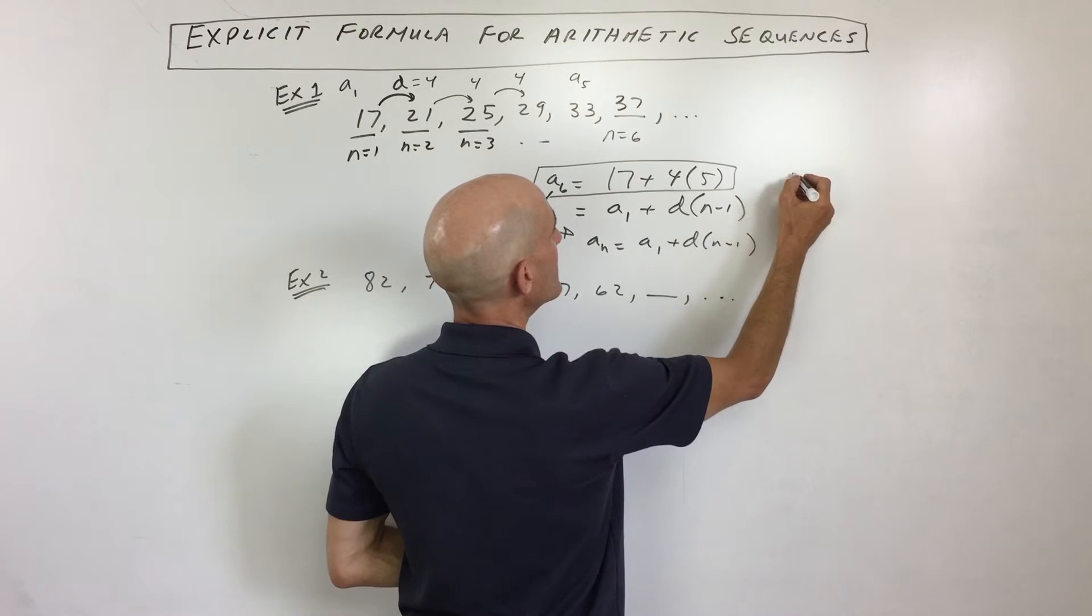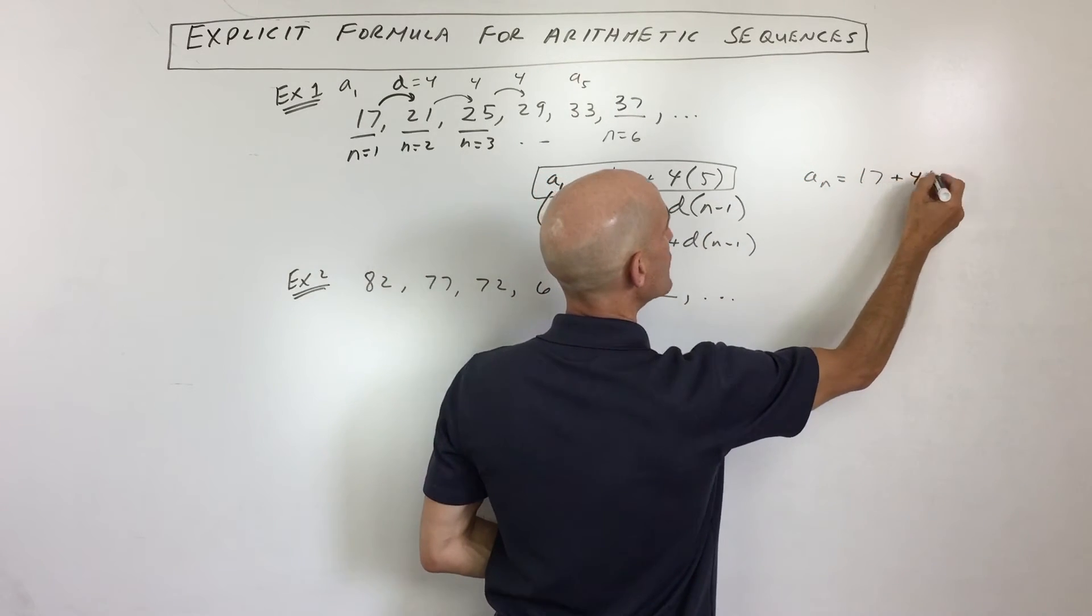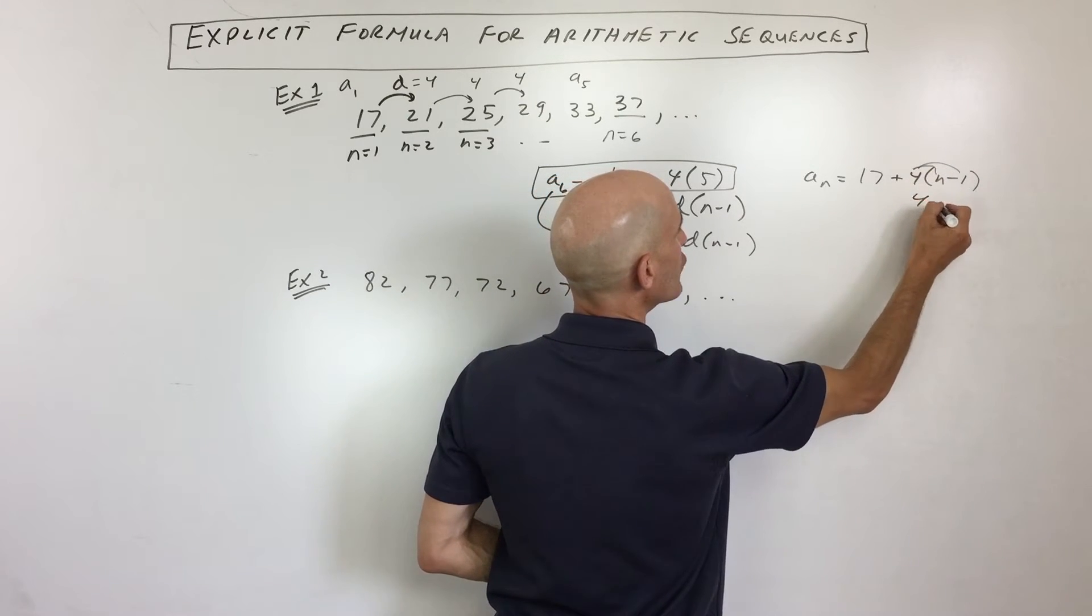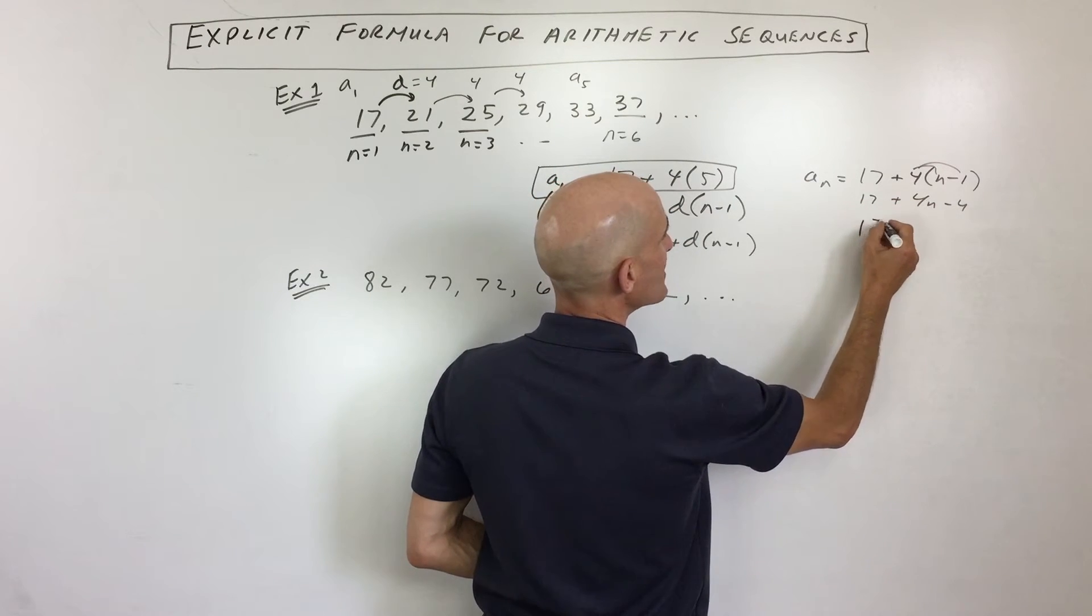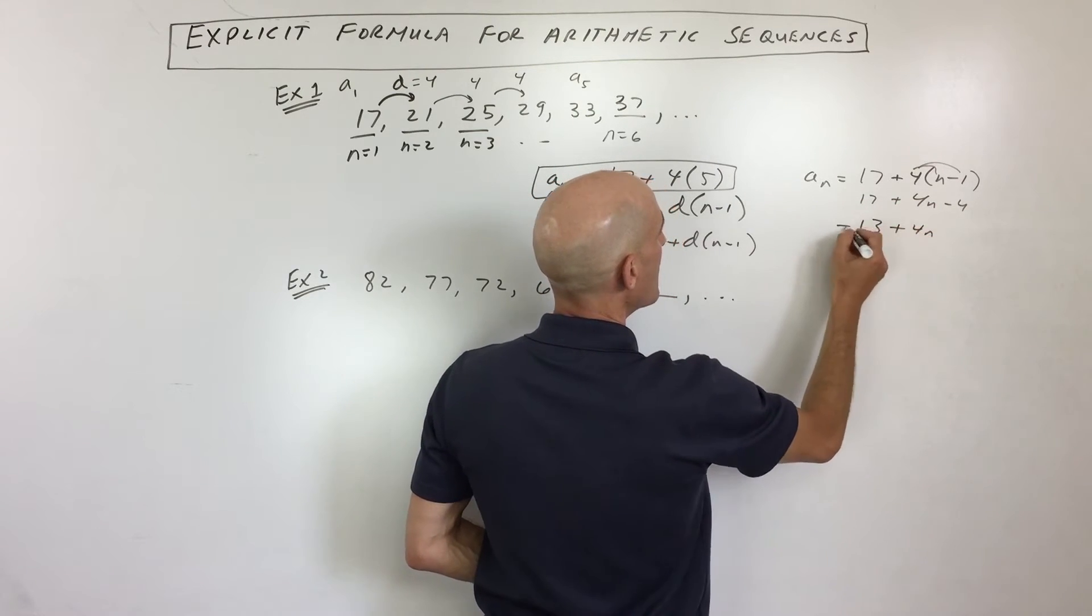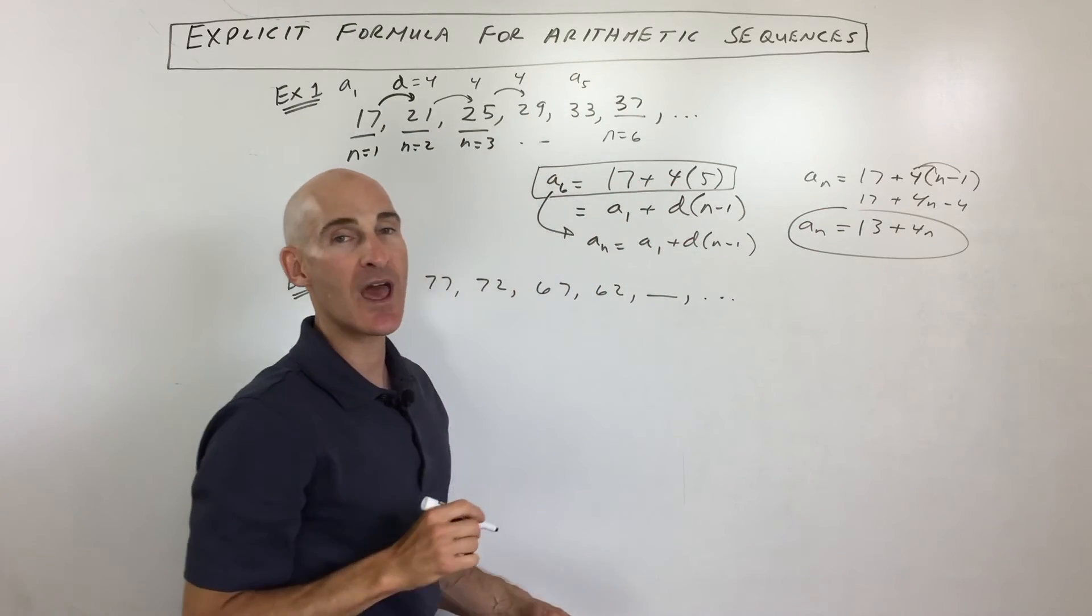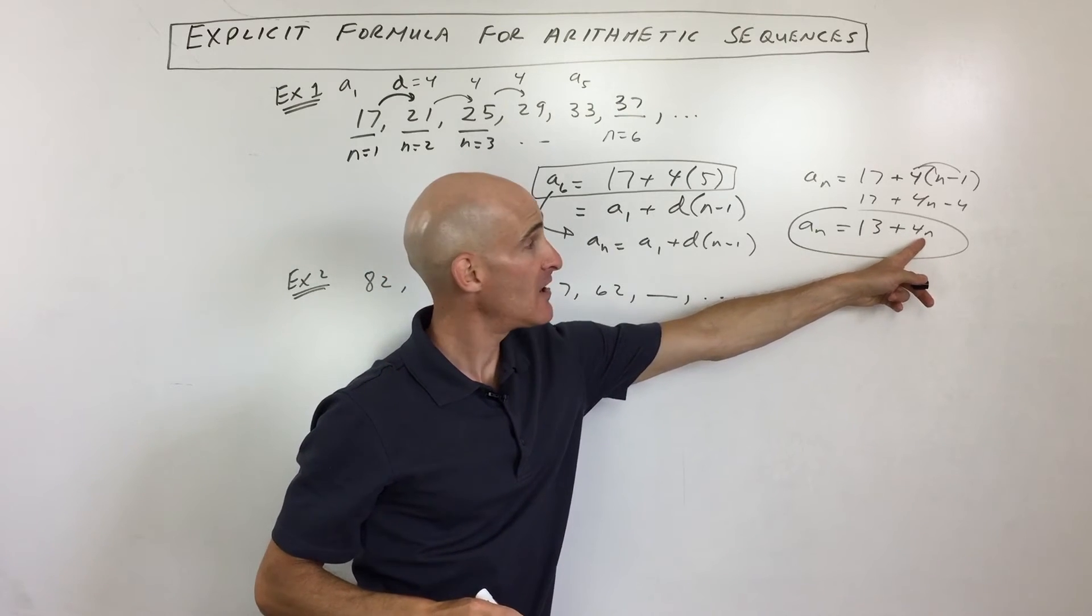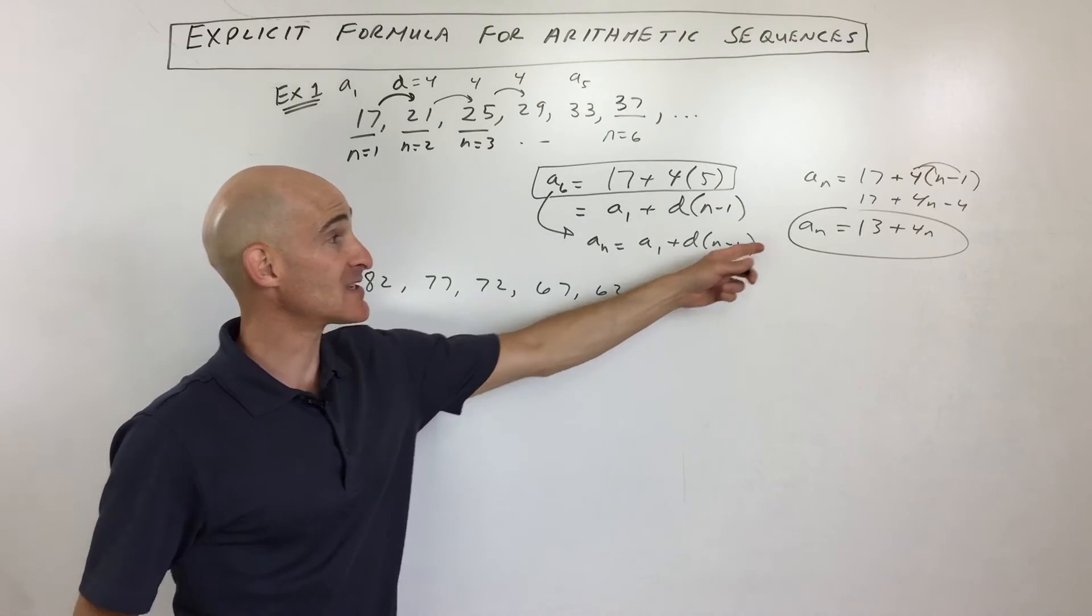So for this problem, we had, let's see, we had a sub n equals 17, that's the first term, plus our common difference, which is 4, times n minus 1. Now, what I would do is I'd clean this up a little bit by distributing. 17 and negative 4 is how much, that's 13, and so now what we have is we have a sub n equals 13 plus 4n, and that'll allow us to find any term. If I want the 100th term, I put in 100, that's 413, and you know, you've got it. So it's a real nice, it takes you right to that particular term.